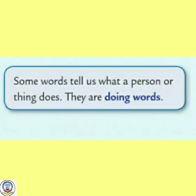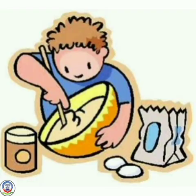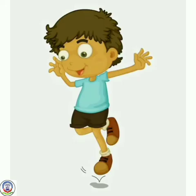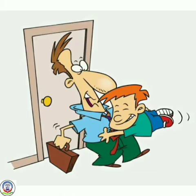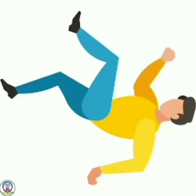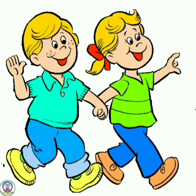There are some words that tell us what a person or thing is doing. They are called doing words. It means these words show some actions are being done. For example: bake, hop, think, bend, jump, come, cry, fall, walk, etc.